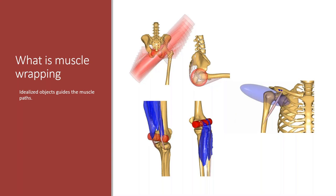If you don't know what muscle wrapping is, it's basically the idealized objects we put in our models to guide muscle paths. Here are some examples from the model — for example, the gastrocnemius wraps over a cylinder that represents the condyle of the femur.